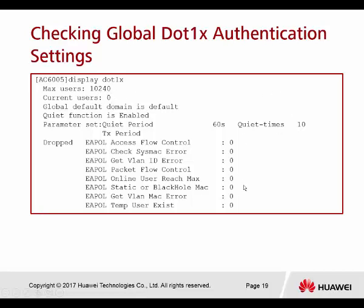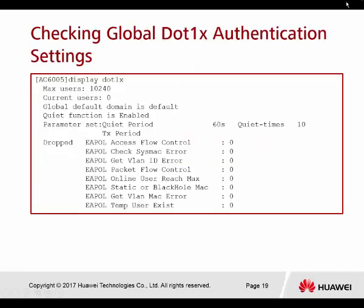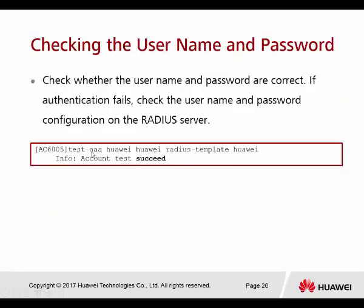All results are shown there. Then you have to test your AAA, because the authentication server is not the controller — it's the RADIUS server located somewhere else. Make sure the controller can connect to the RADIUS server. In Huawei AC, you can use the command 'test-aaa' with the user account name and password to check whether authentication succeeds or fails.